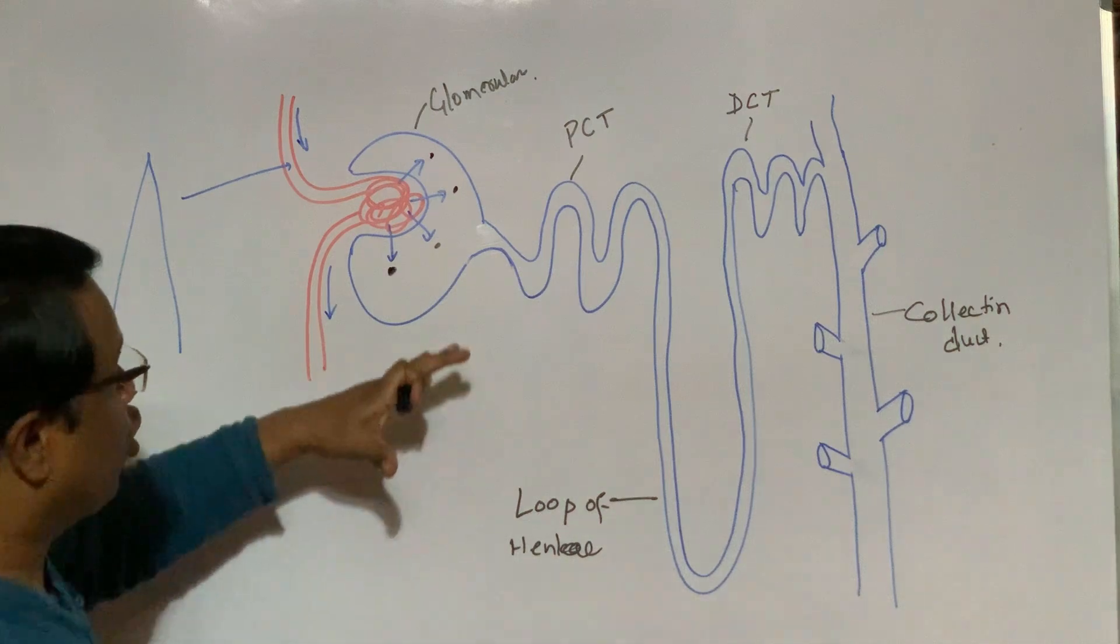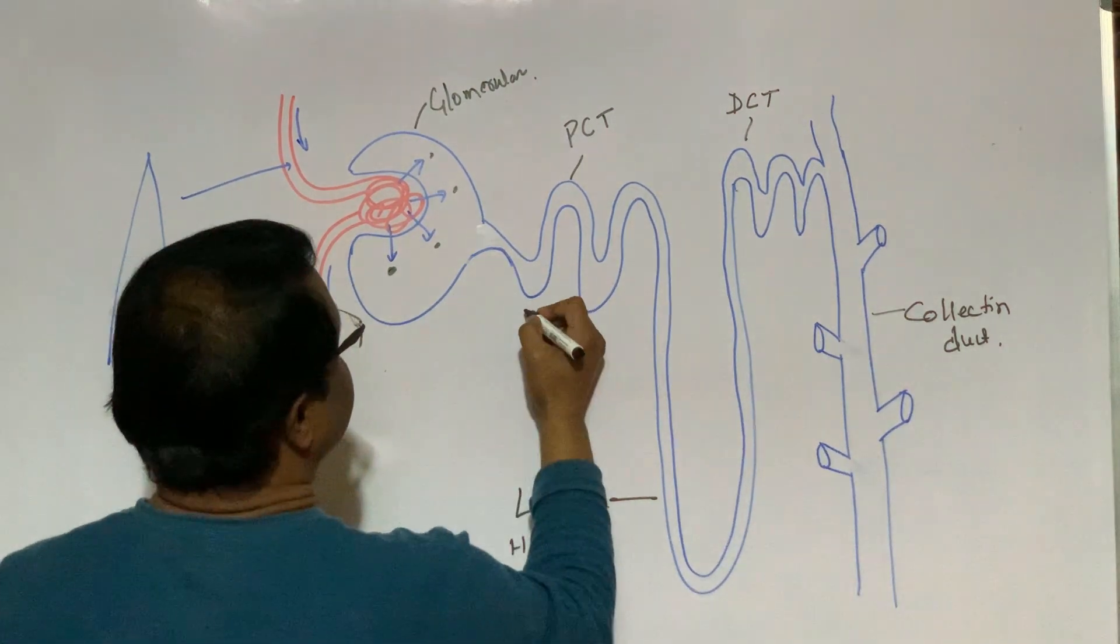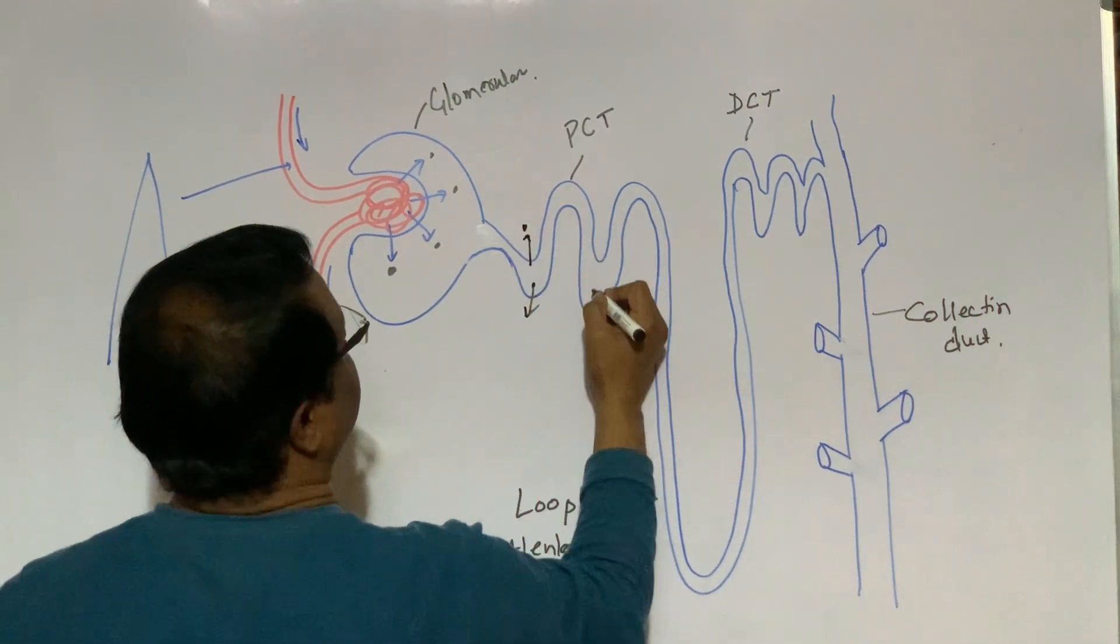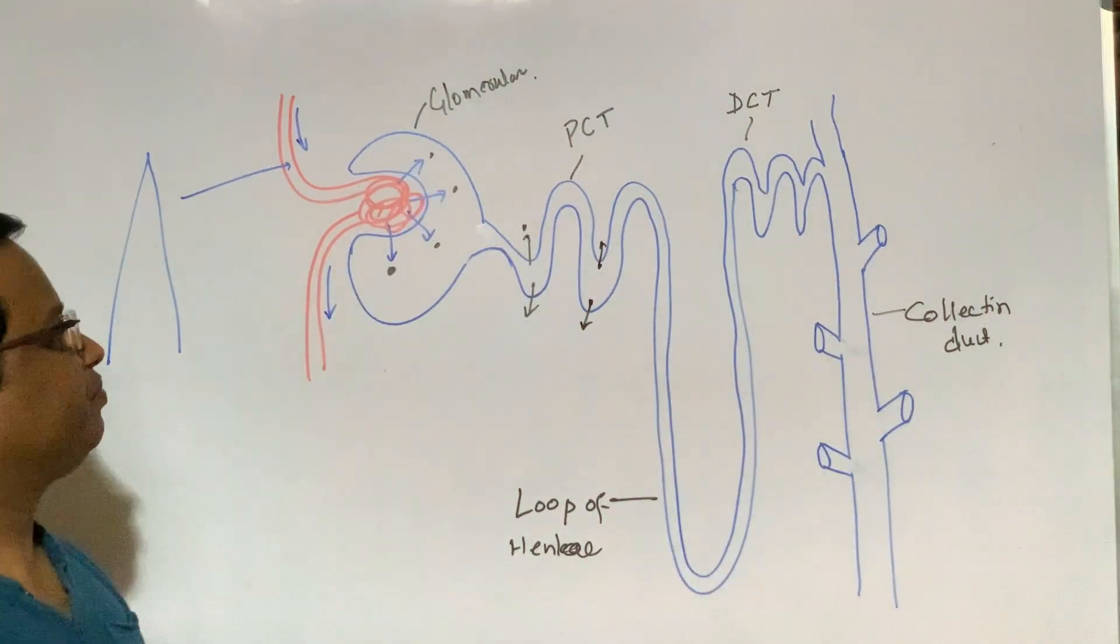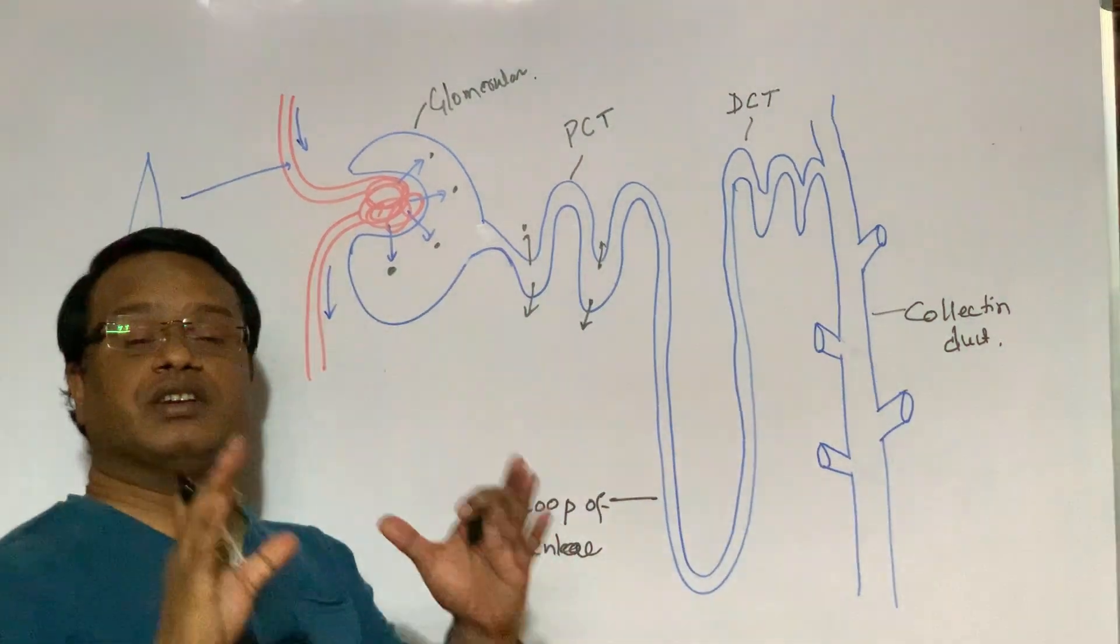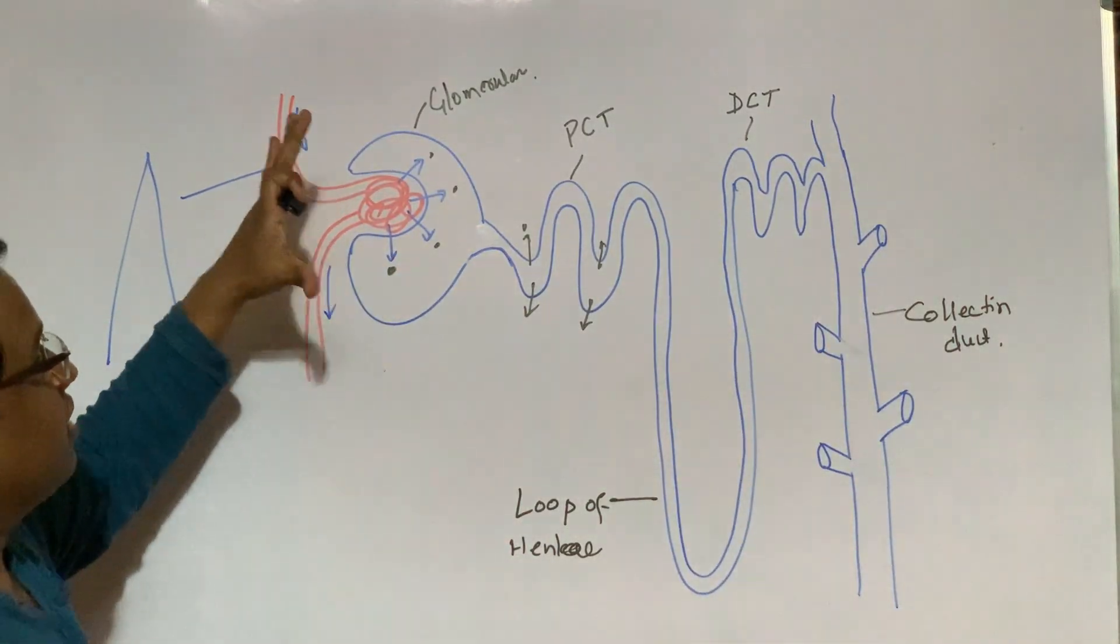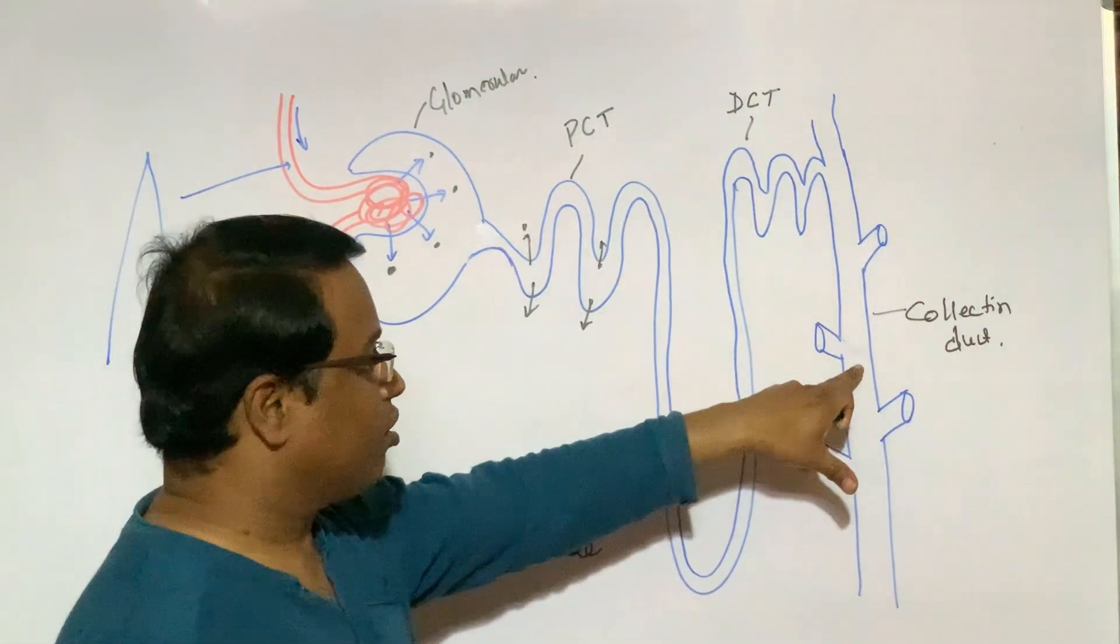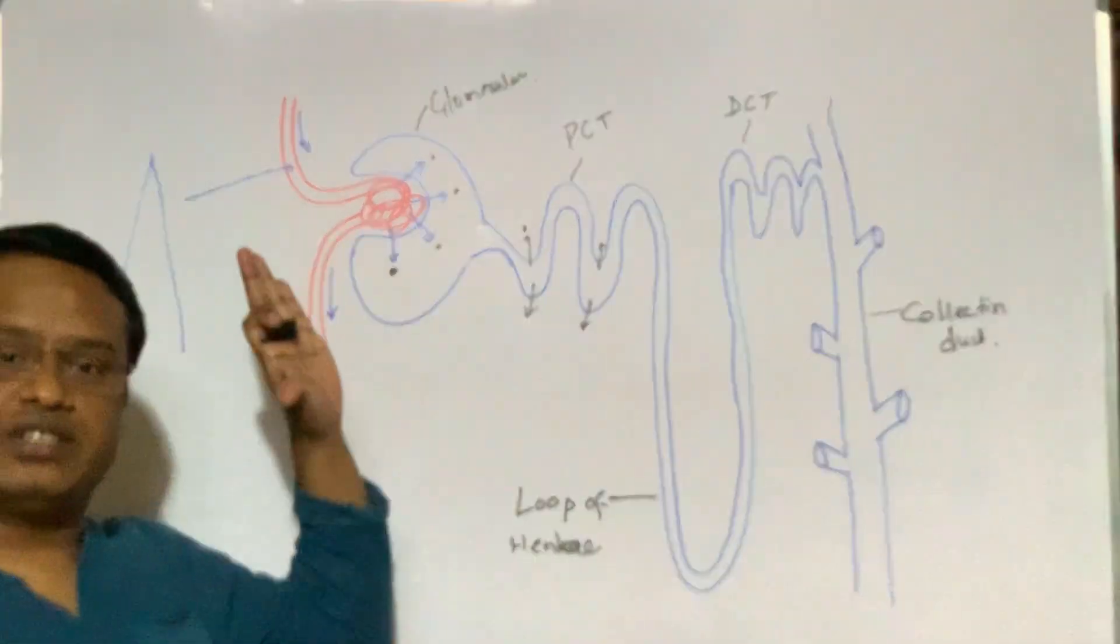But in normal circumstances, when everything is normal, this glucose is reabsorbed from different parts of nephron and ultimately, our urine does not have any sugar content. This is the normal phenomenon, but when this sugar level reaches beyond 180 mg per dl, our urine may contain sugar residue.